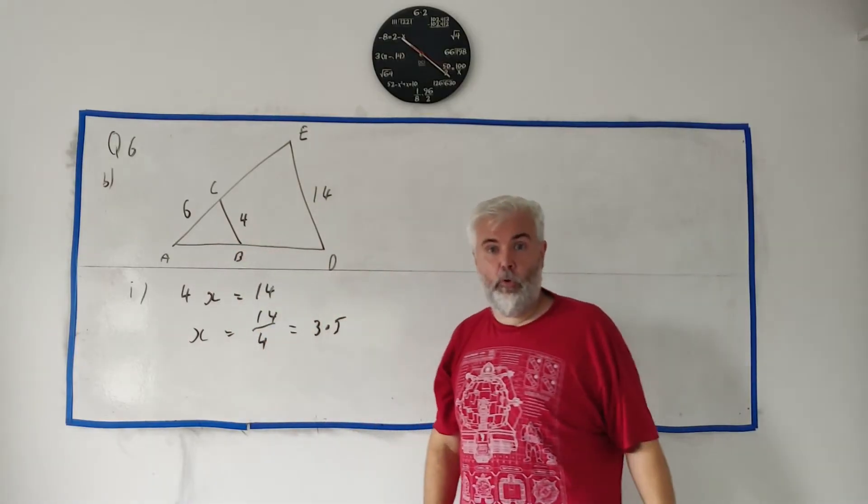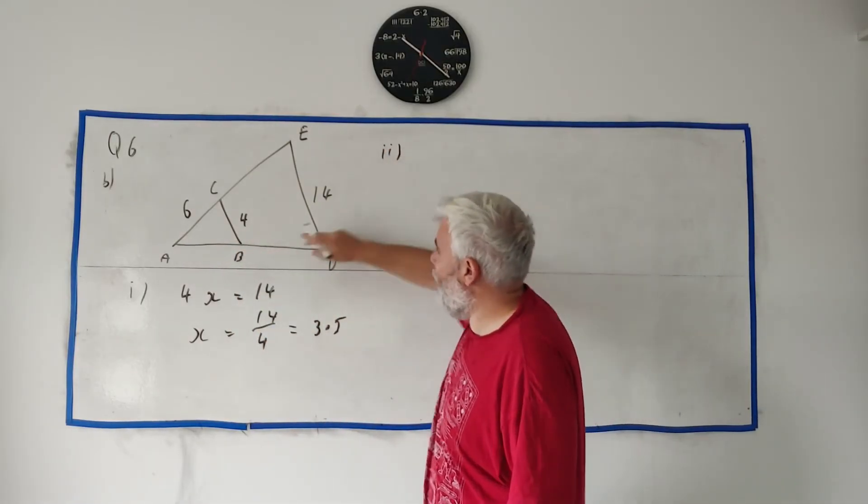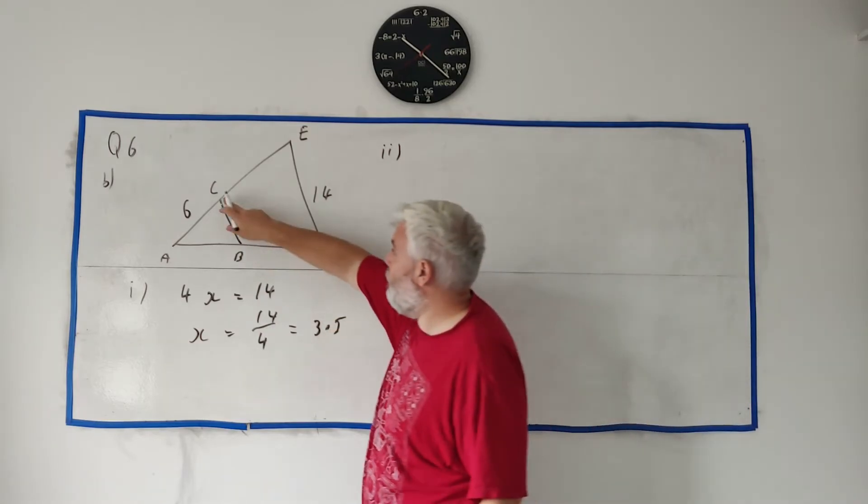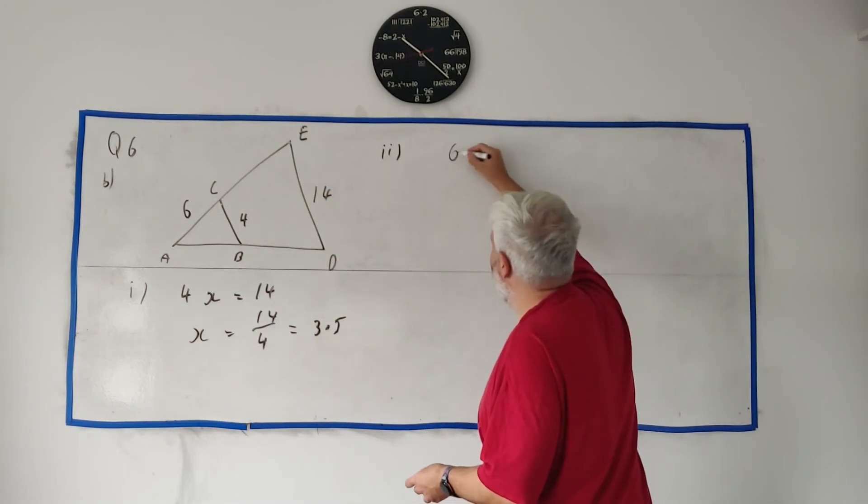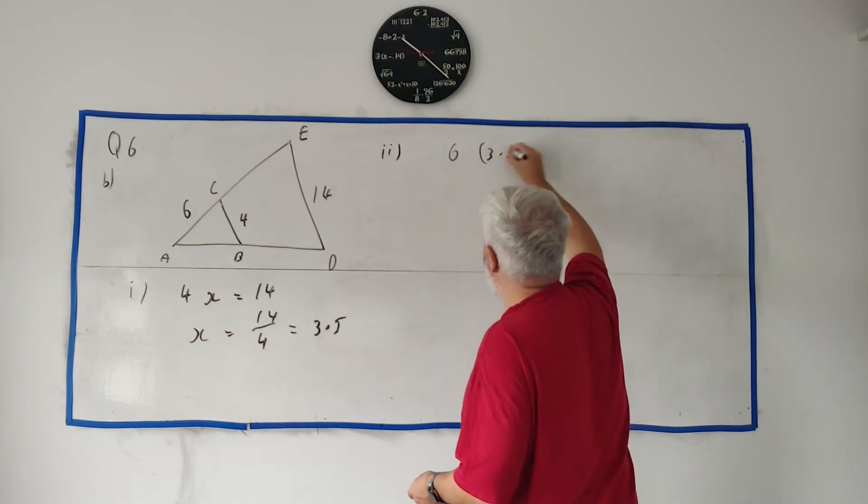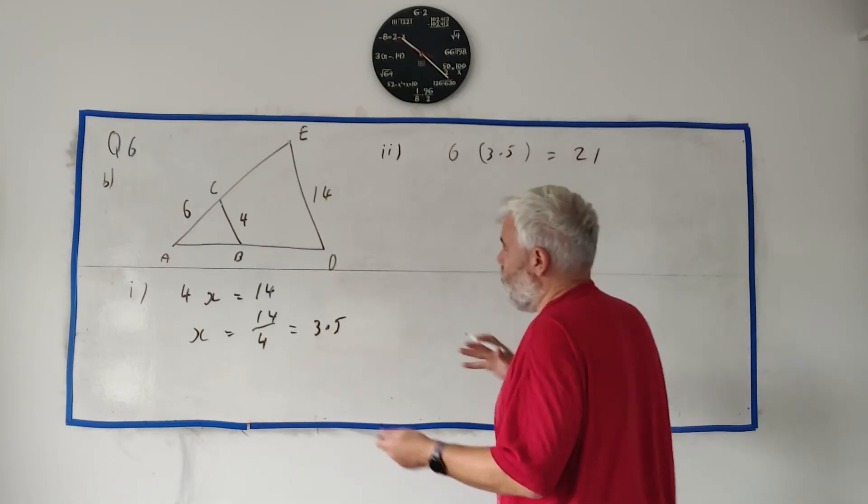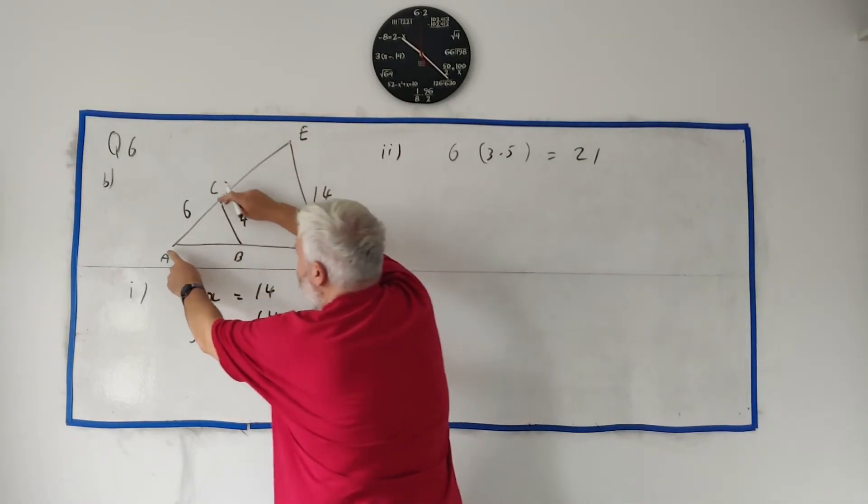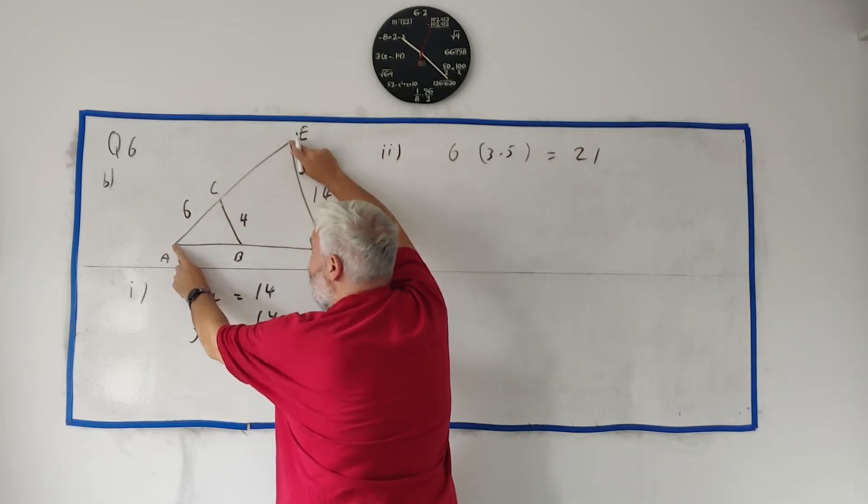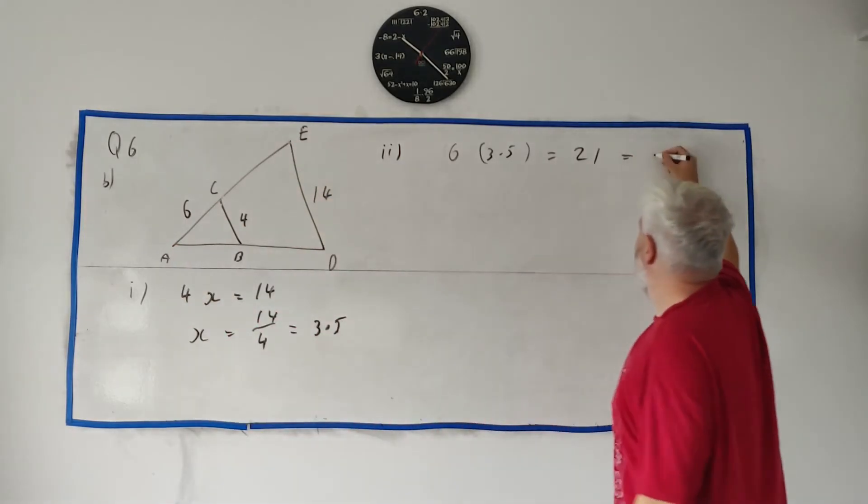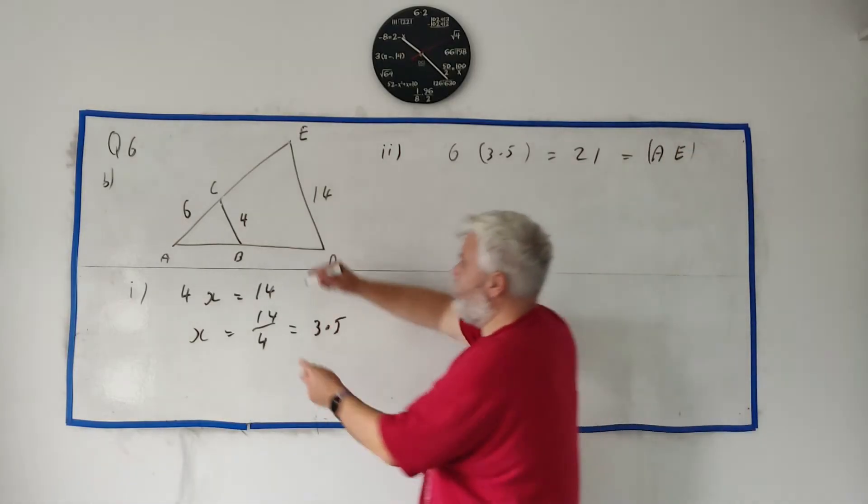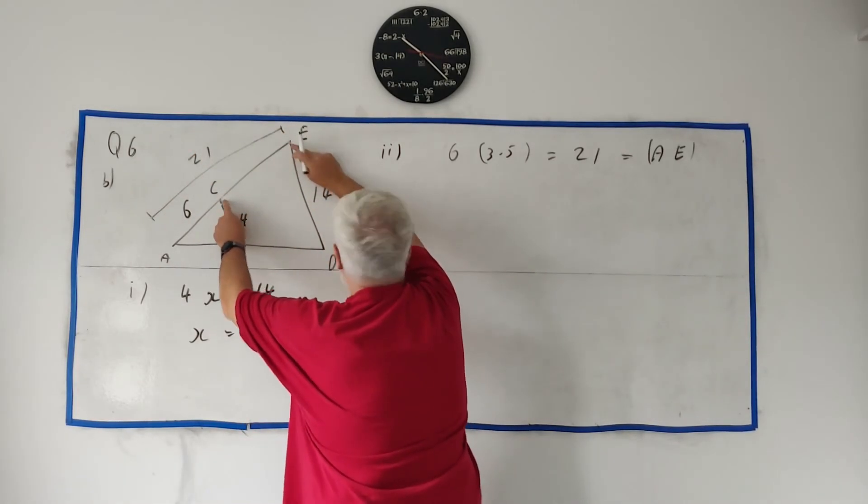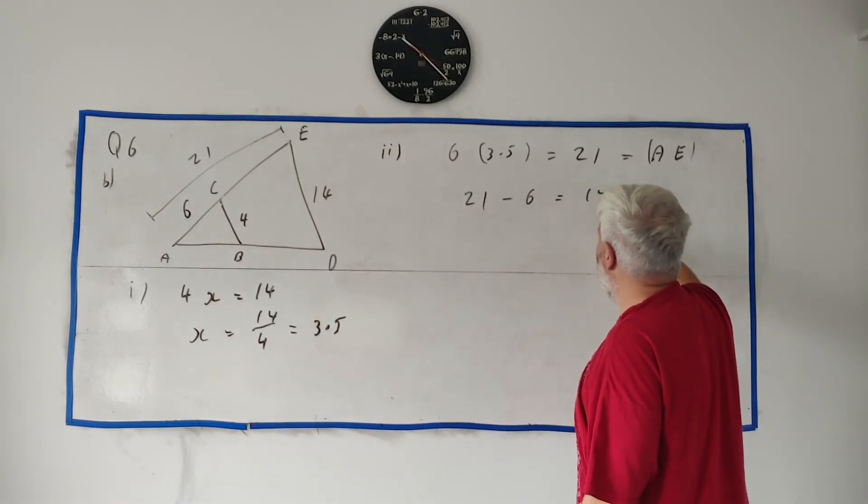For part 2 they remind us that AC is six units long and they want us to use the scale factor to find the distance CE. Straight away some students might just go six multiplied by 3.5 equals 21, but that's not the answer. Multiplying this by 3.5 gives you AE, this entire length here is equal to 21. So what's this length in here? It's just 21 minus 6 and that's 15.